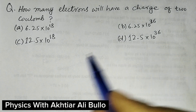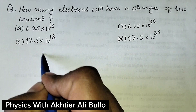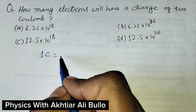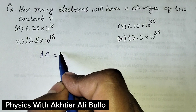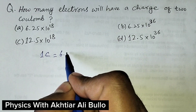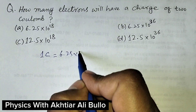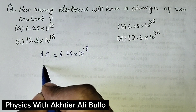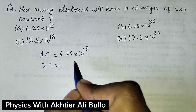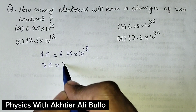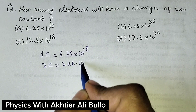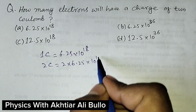1 coulomb of charge has a number of electrons equal to 6.25 into 10 raised to power 18. So 2 coulombs of charge will have a number of electrons equal to 2 into 6.25 into 10 raised to power 18.